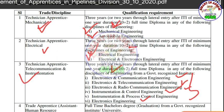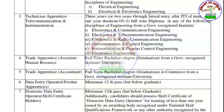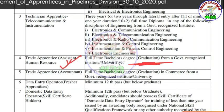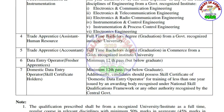Applicants must have a full-time bachelor's degree graduation from a recognized institution. An Apprentice Accountant can apply with a full-time bachelor's degree. A Data Entry Operator can apply with H.S. qualification. A Domestic Data Entry operator can also apply with H.S. qualification.